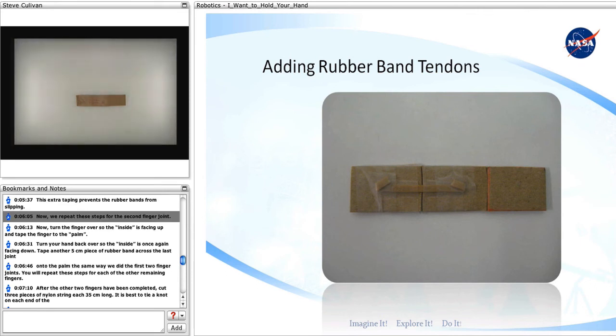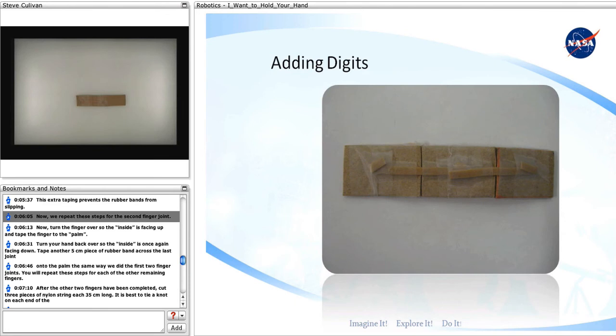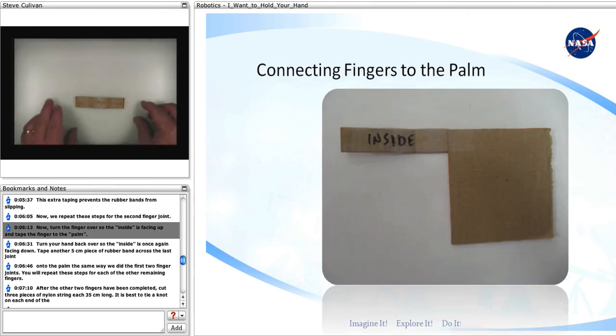Now, we repeat these steps for the second finger joint. Now, turn the finger over so the inside is facing up and tape the finger to the palm.